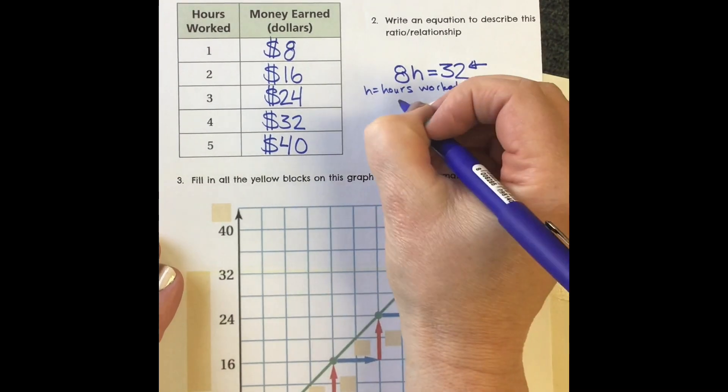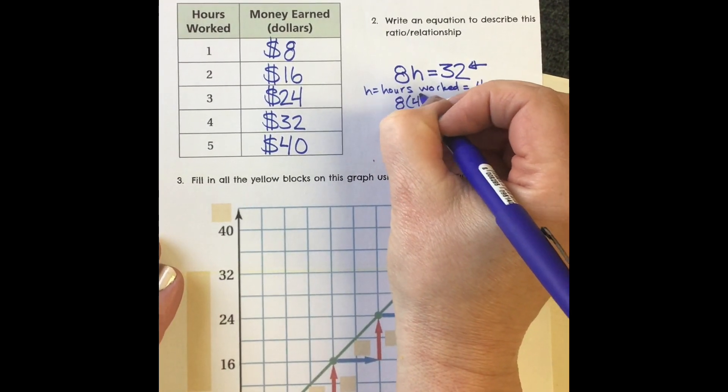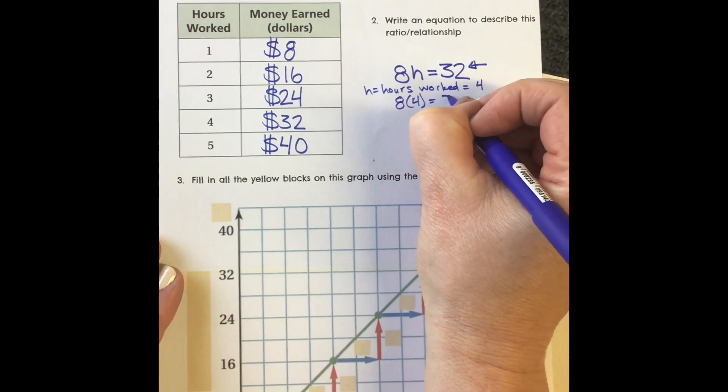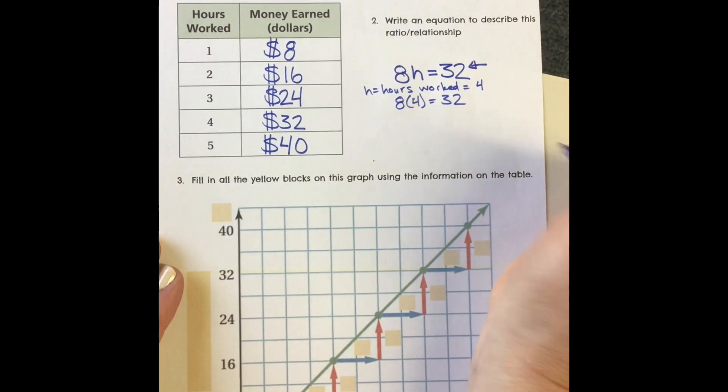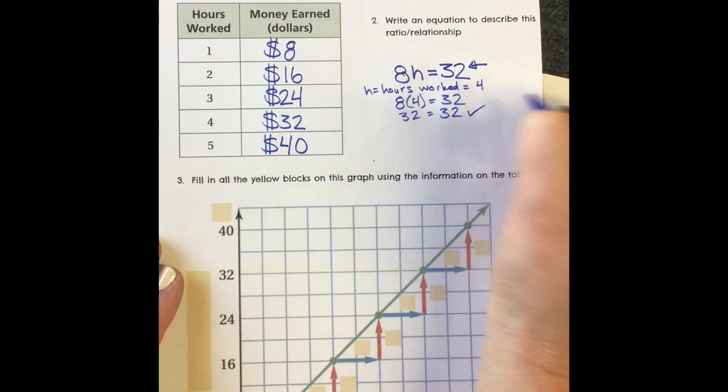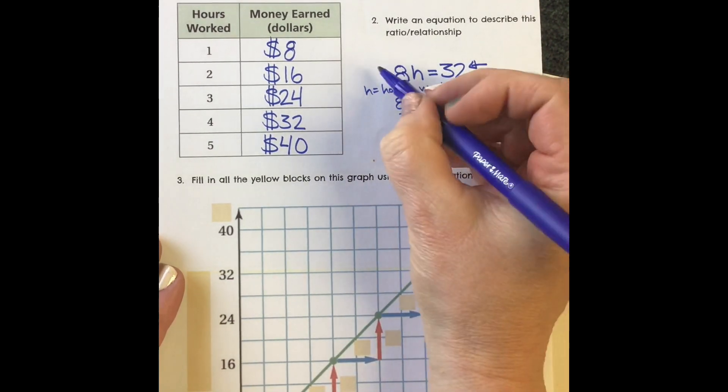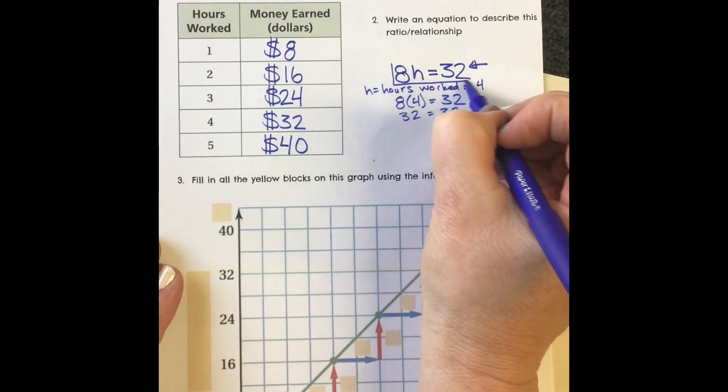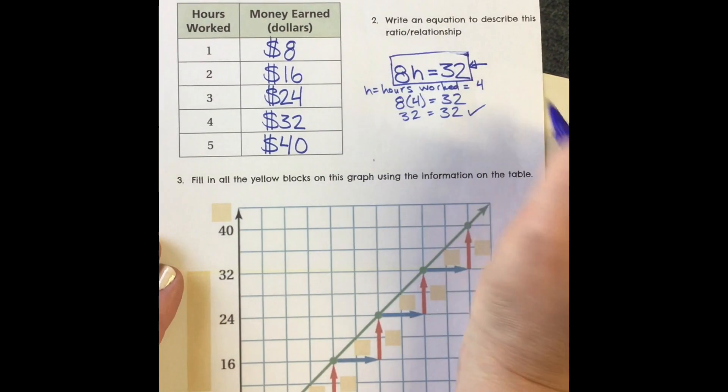Because when I substitute, 8 times 4 equals 32, and 32 equals 32, so that works. That's how I could write a simple one-variable equation for this ratio or relationship.